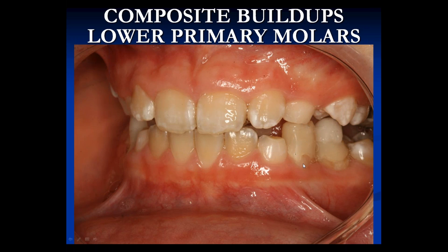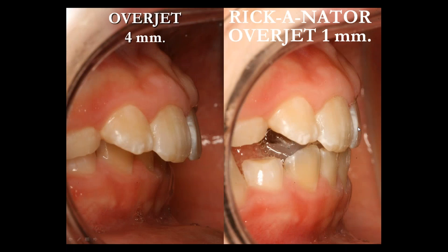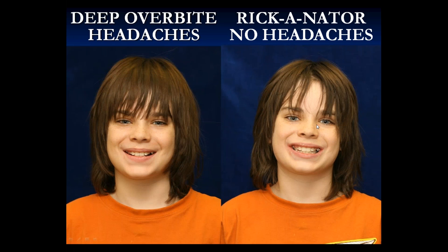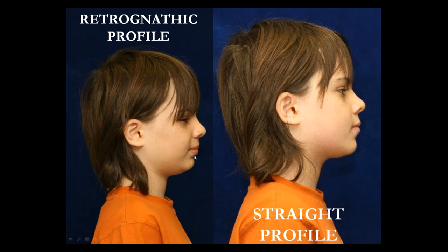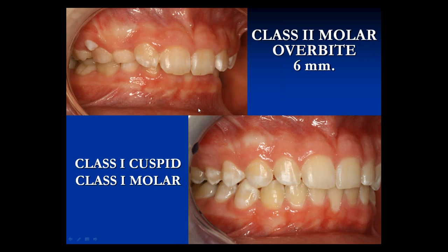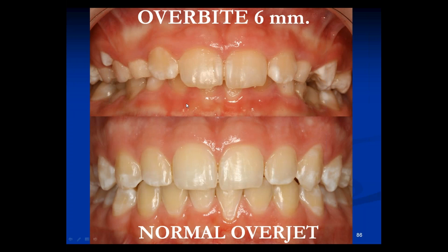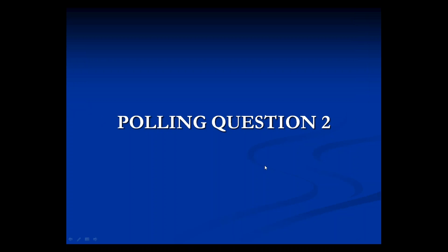We need to put composite buildups on the primary molars so he can chew. When those primary molars come out, the bicuspids will erupt to the same level and you're establishing a completely new occlusal plane — this is so easy and so important for children. There he is with the deep bite, and that photo was taken about an hour later. Maybe his headaches didn't go away in an hour, but within a day they go away — it's amazing. Look at the difference in his face: the little crease under his lip is gone; he looks much more handsome — and he's only an hour older. Class 2 molar: bring the jaw forward with the Rickinator, open the bite — now he's got a class 1 cuspid, class 1 molar, normal overjet, normal overbite. We finished him with braces.